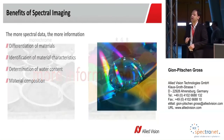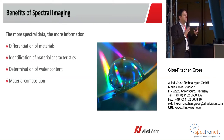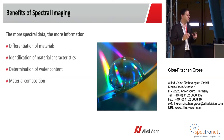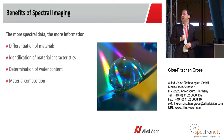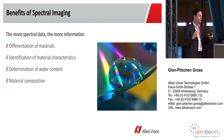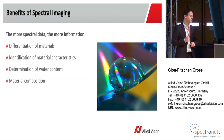Generally, the more spectral data I have, the more information I can extract from the image. I can start to differentiate different materials, and I can even identify some material characteristics — for example, I can determine the water content of certain materials, or even the material composition.